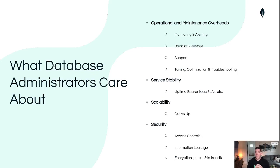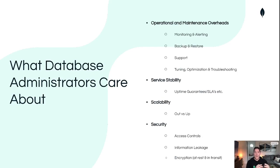Finally for this segment, we have tuning, optimization, and troubleshooting — basically making sure that our database, the engine of our application, continues to run efficiently. That ties into the next point, which is service stability. Given that we want it to be a stable system, we are going to want to make sure that we can design and maintain certain levels of uptime guarantees and service level agreements into the database system that we're developing for.